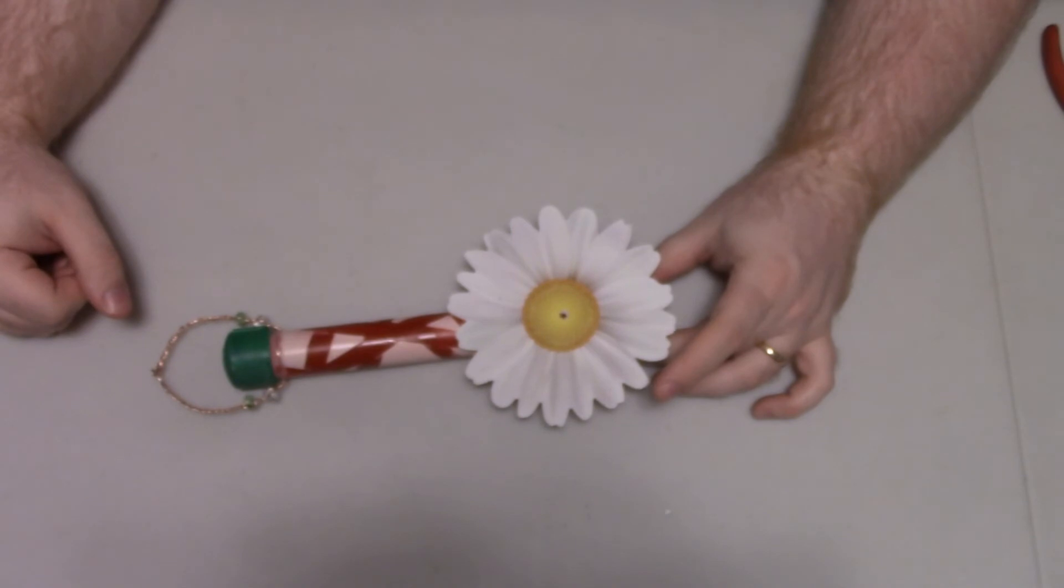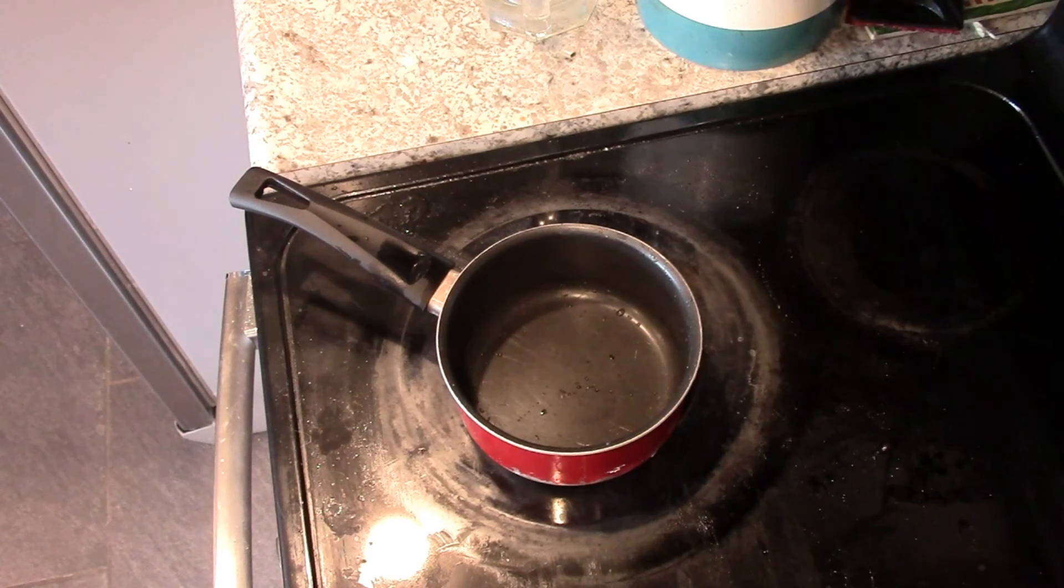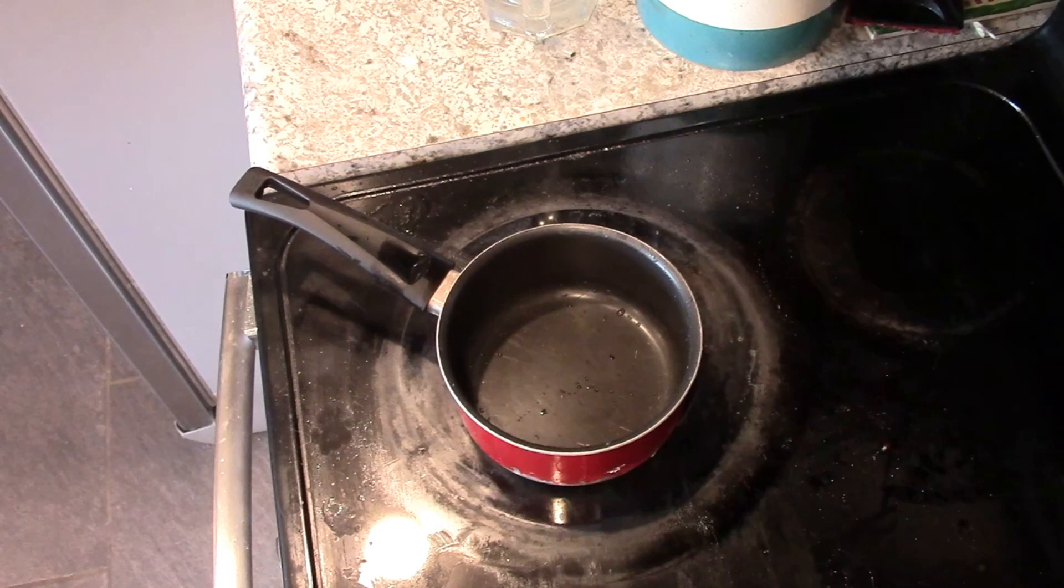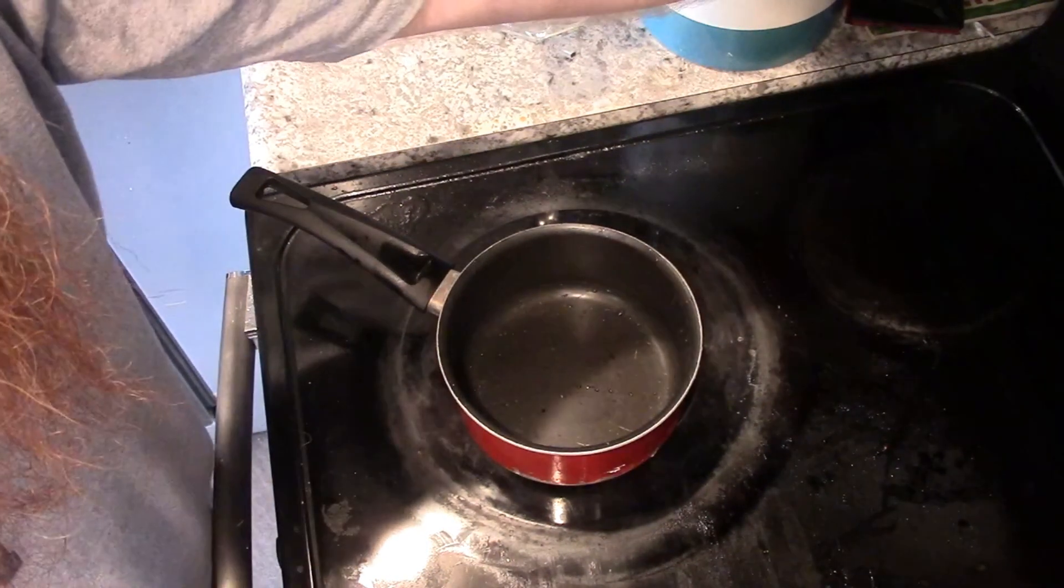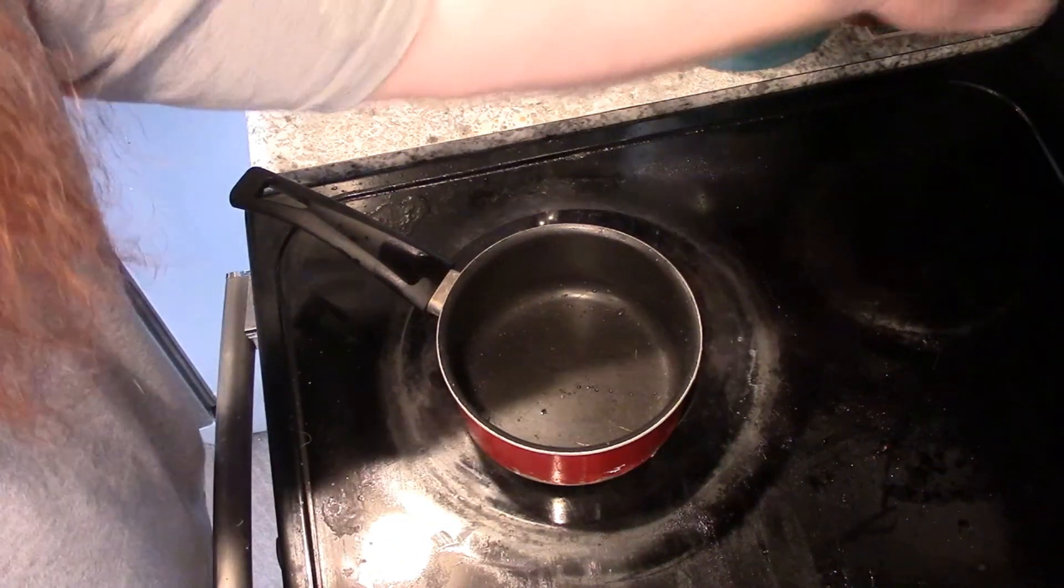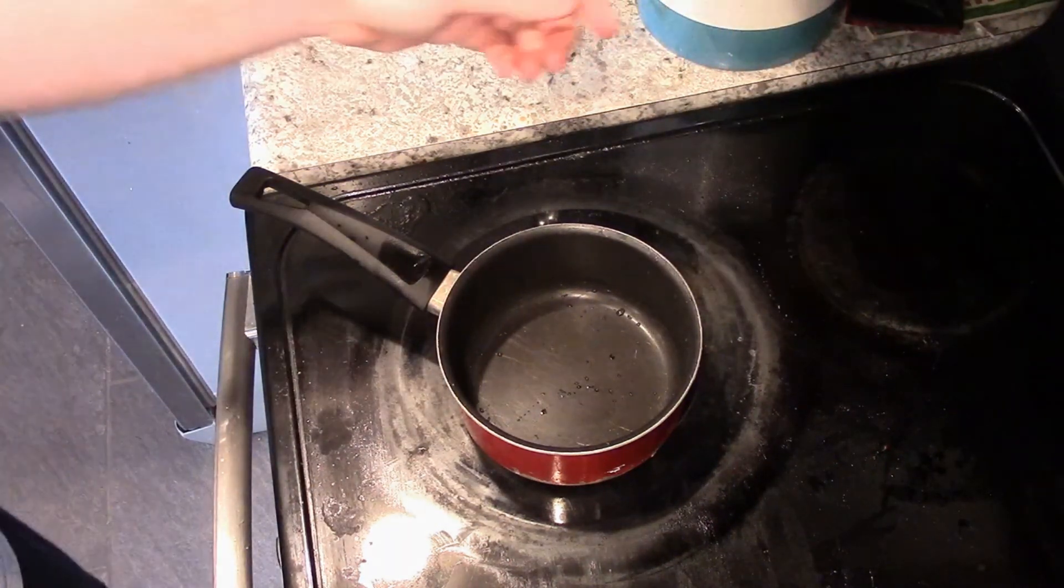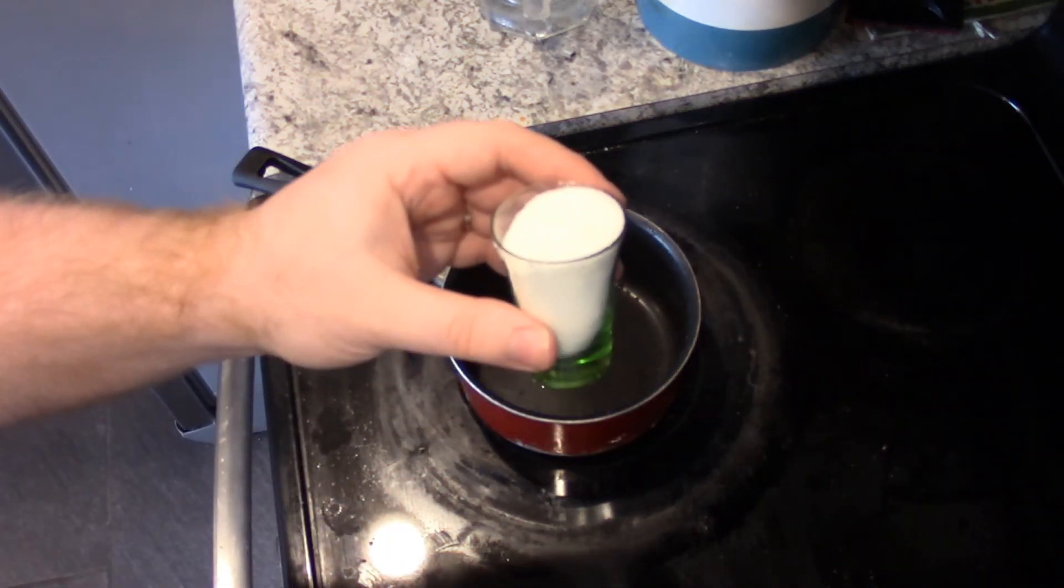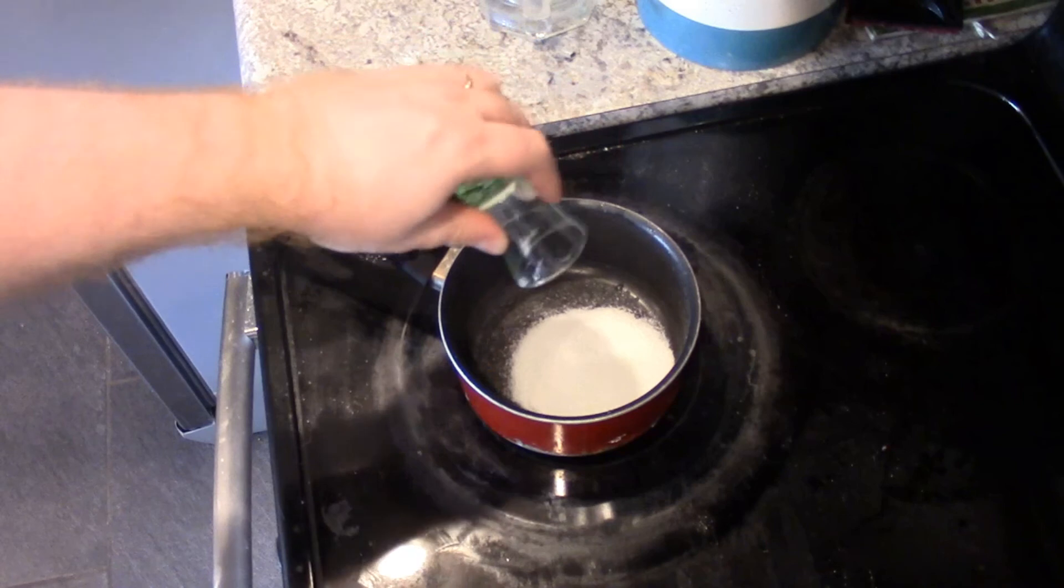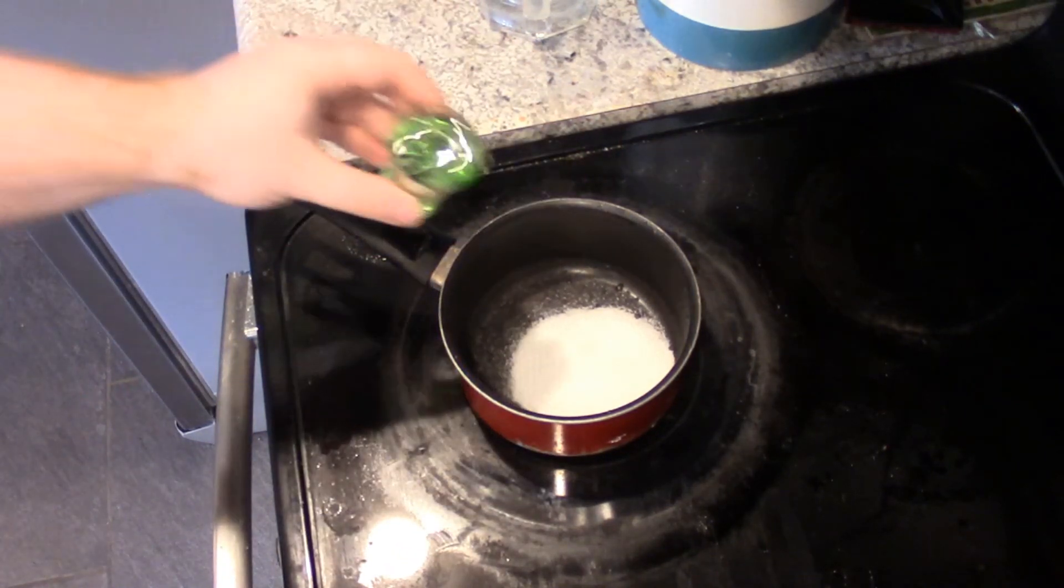When it comes to filling our bird feeder, you want to do so with simple syrup. This is a mixture of sugar and water and it's very easy to make. Start by placing a small saucepan on a stove top burner. Turn the burner to its lowest setting. Warming the water helps to dissolve the sugar completely, but we do not want anything boiling. Next, add in a mixture of one part white refined sugar to four parts water.